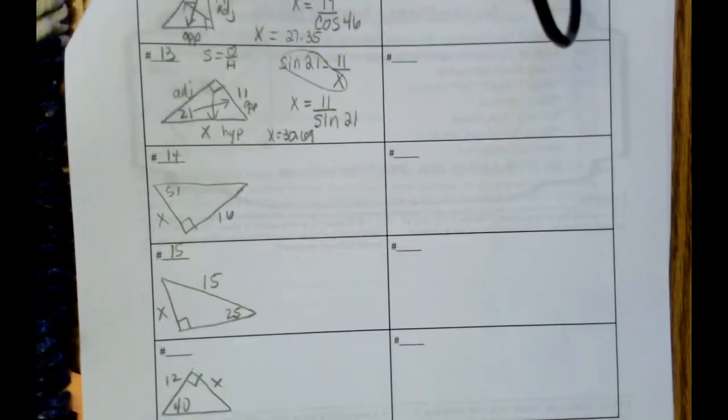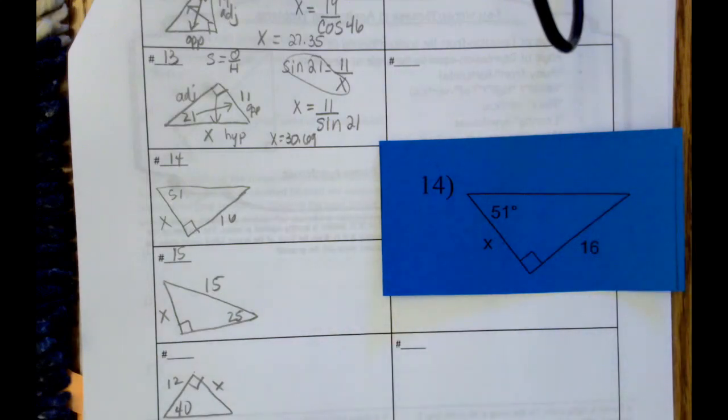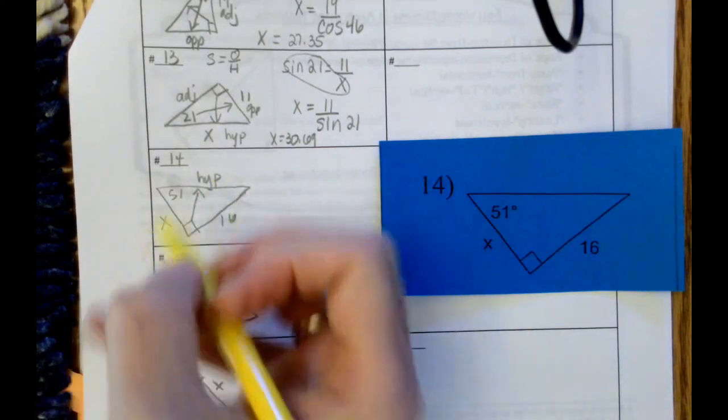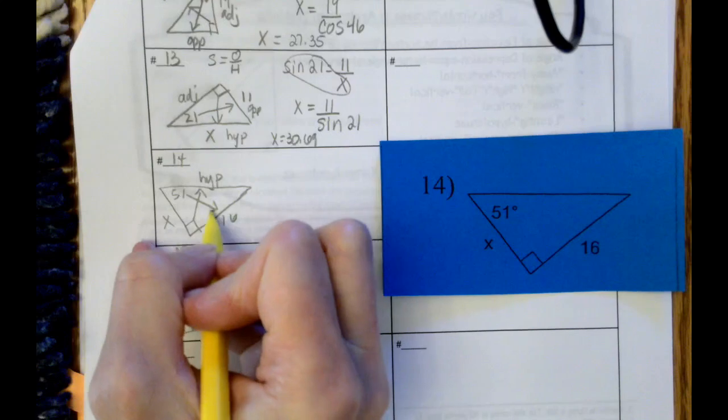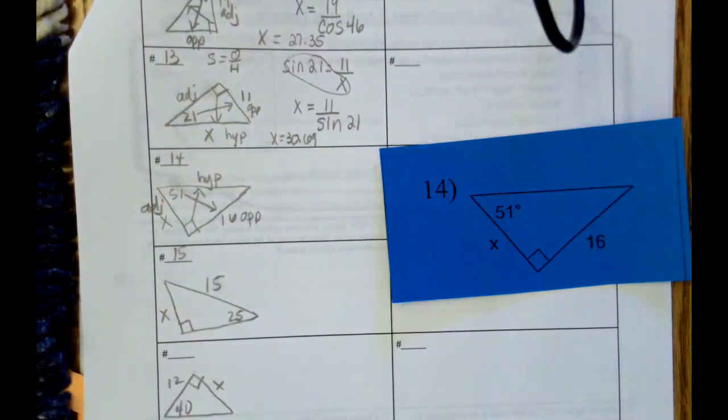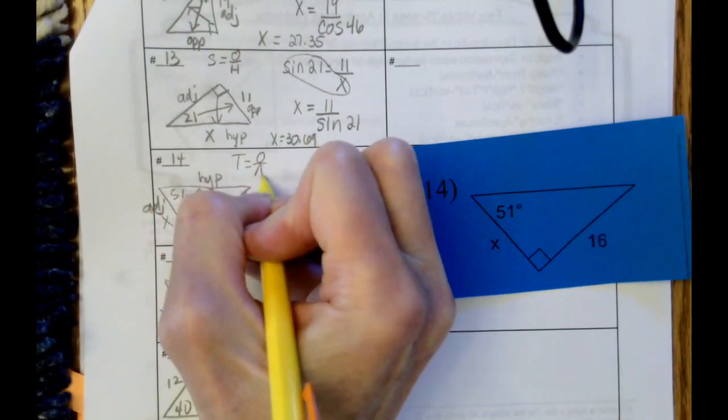Problem number 14. Again, we can look at the picture or draw the picture, and then we label. Starting with across from the right angle is the hypotenuse. Across from 51 is the opposite, which means that our last side is the adjacent. We know the adjacent has a length of x, we know the opposite has 16, and the function that has adjacent and opposite in it is tangent, and it's actually opposite over the adjacent.